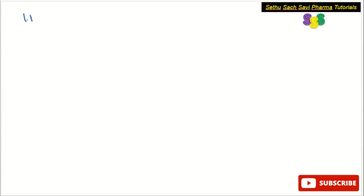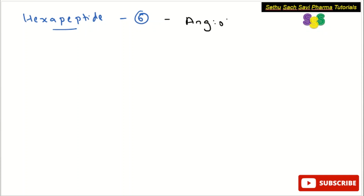Coming to hexapeptide — it is made up of six amino acids. The example to remember is angiotensin 4; remember the numeral — angiotensin 4 is an example of a hexapeptide. Coming to heptapeptide, which contains seven amino acids, the example is angiotensin 3.